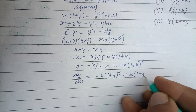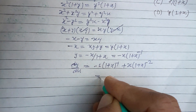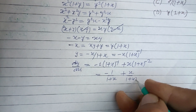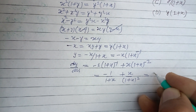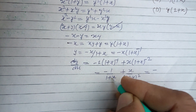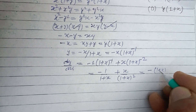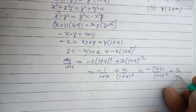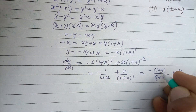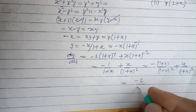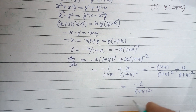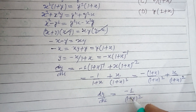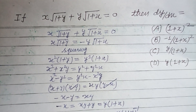This gives us −1/(1+x) + x/(1+x)². Combining over a common denominator (1+x)², we get −(1+x)/(1+x)² + x/(1+x)², which simplifies to −1/(1+x)². So dy/dx = −1/(1+x)², which is found in option B.